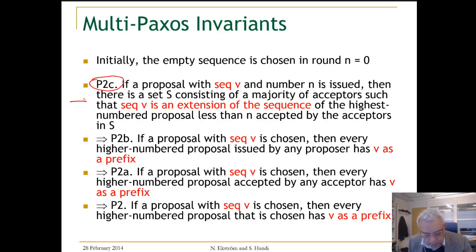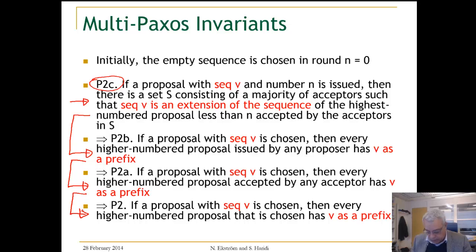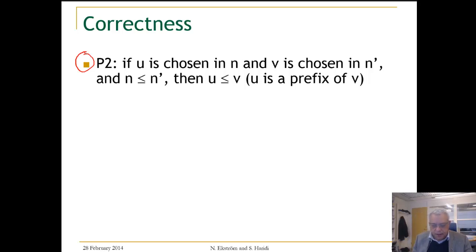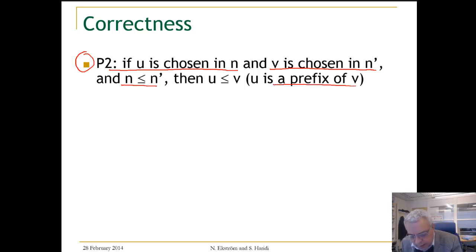This invariant was guaranteed by the promise, and it implies that every higher number proposal issued has V as a prefix, which implies every higher number proposal accepted by an acceptor has V as a prefix, which implies every higher number proposal that is chosen has V as a prefix. This is P2 in principle, which says if U is chosen in N, and V is chosen in N prime, and N prime is greater or equal to N, then U is a prefix of V.